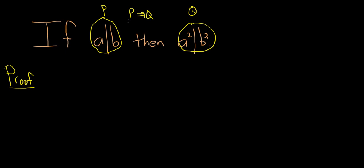So to prove a p implies q statement, you start by assuming that p is true. So you say something like, suppose p is true. So in this case, p is simply a divides b.